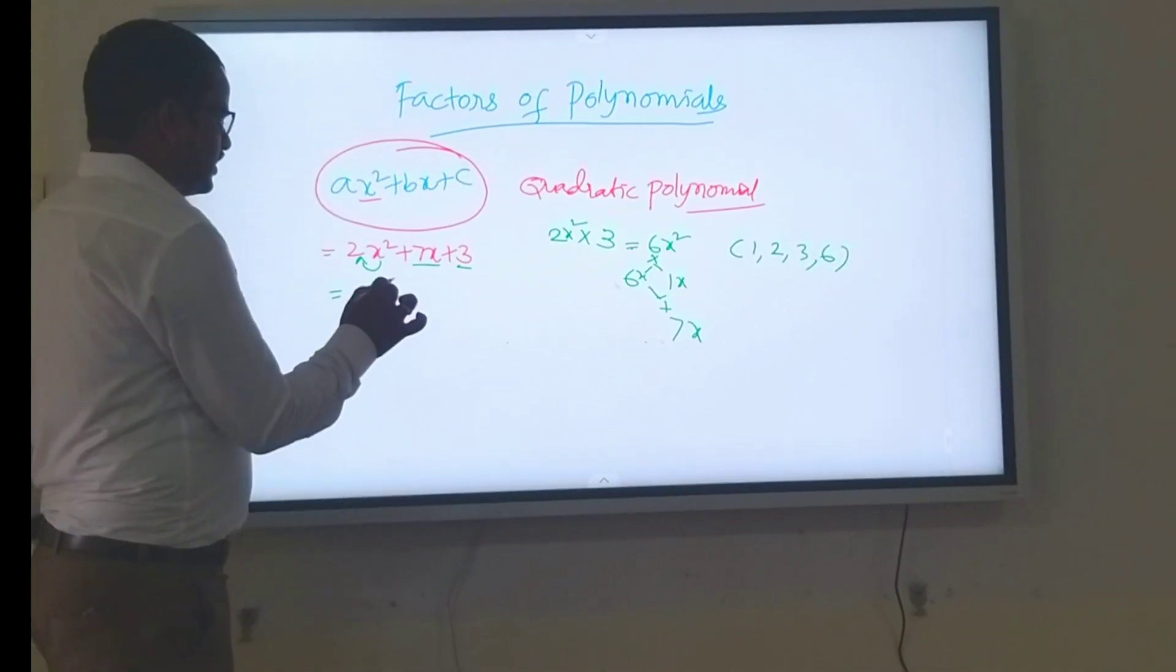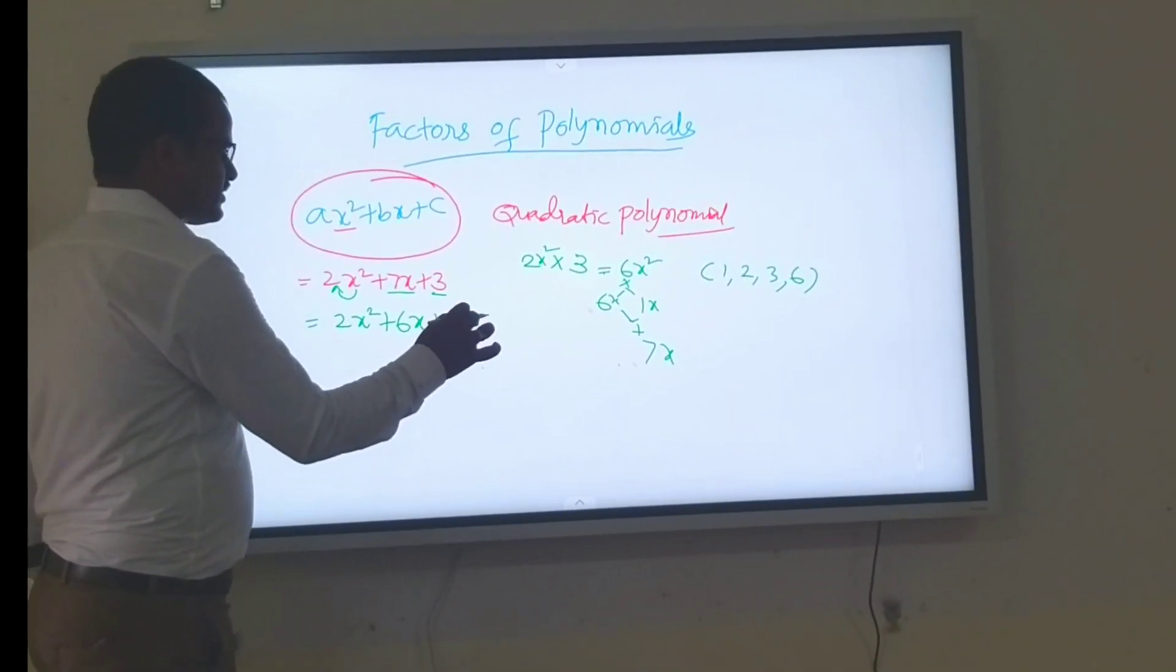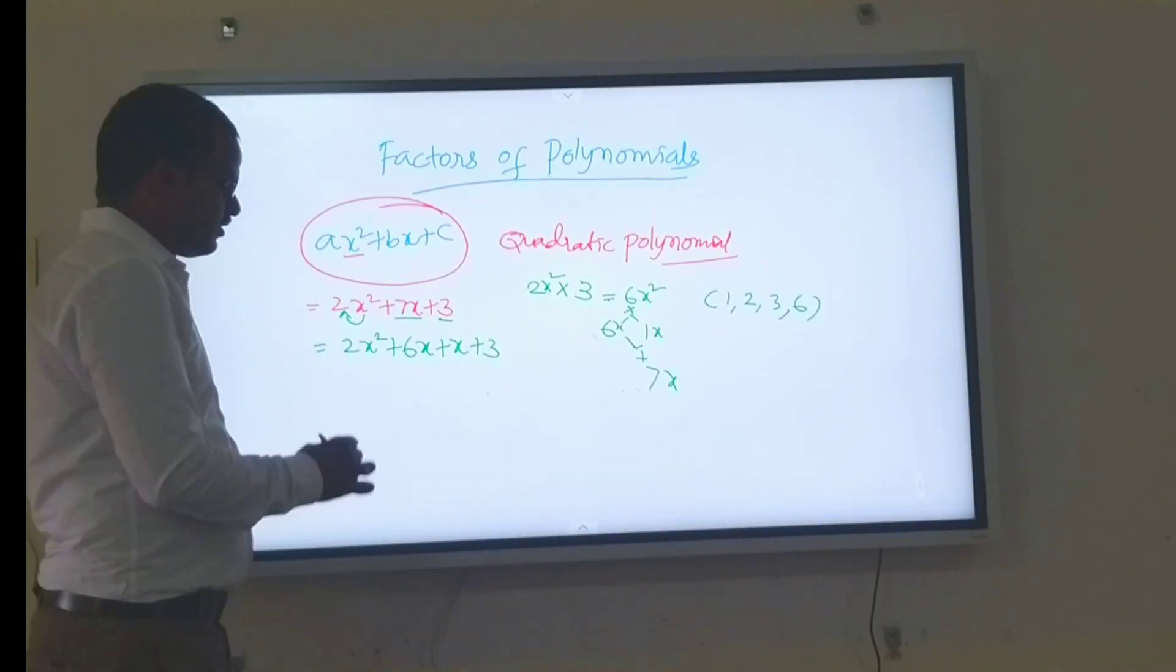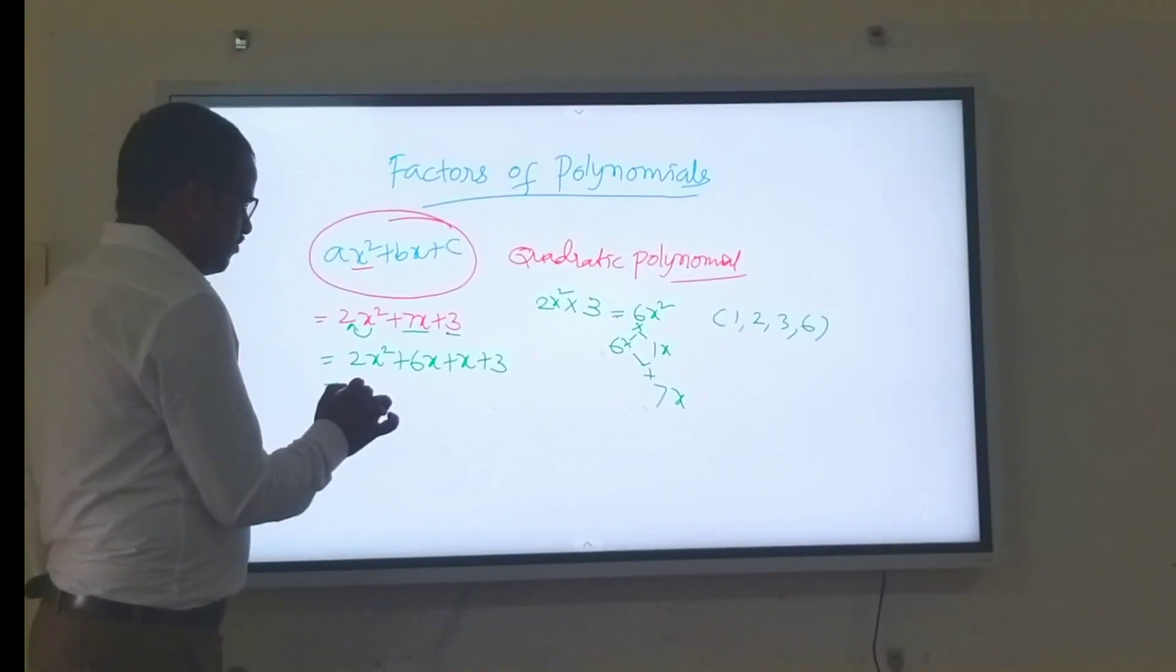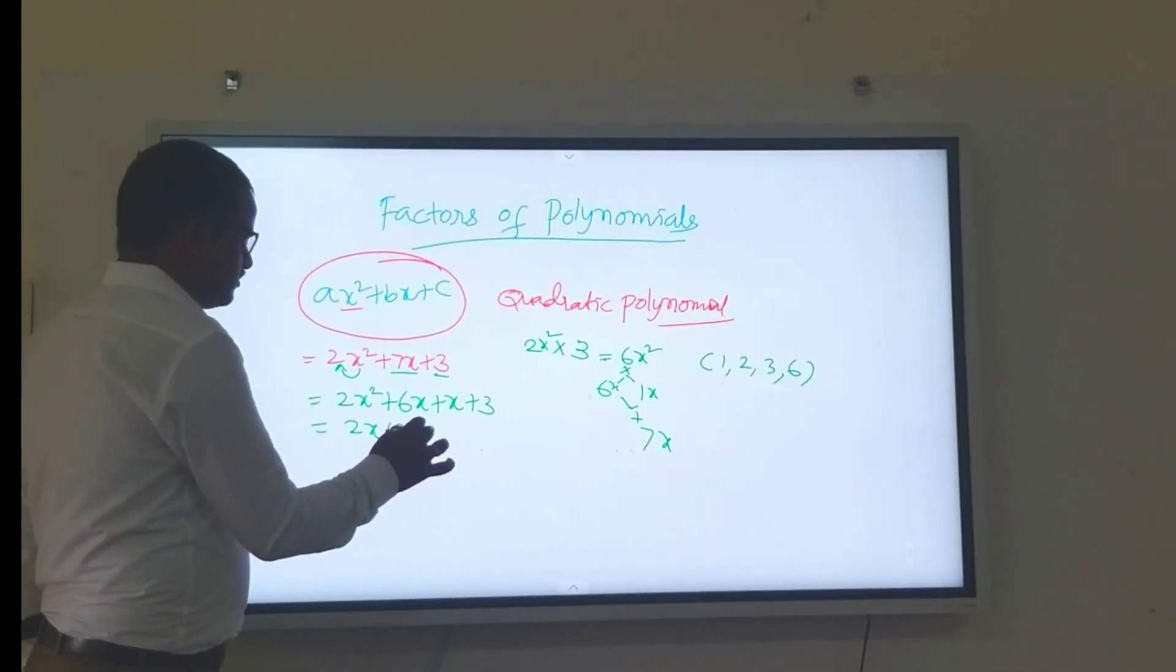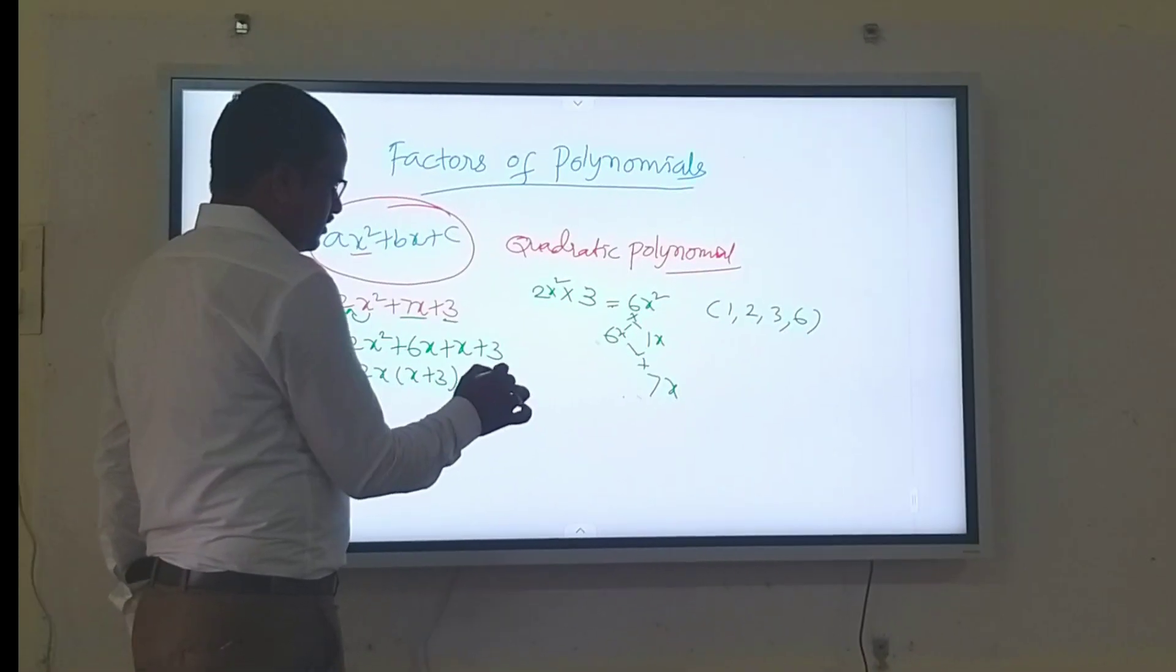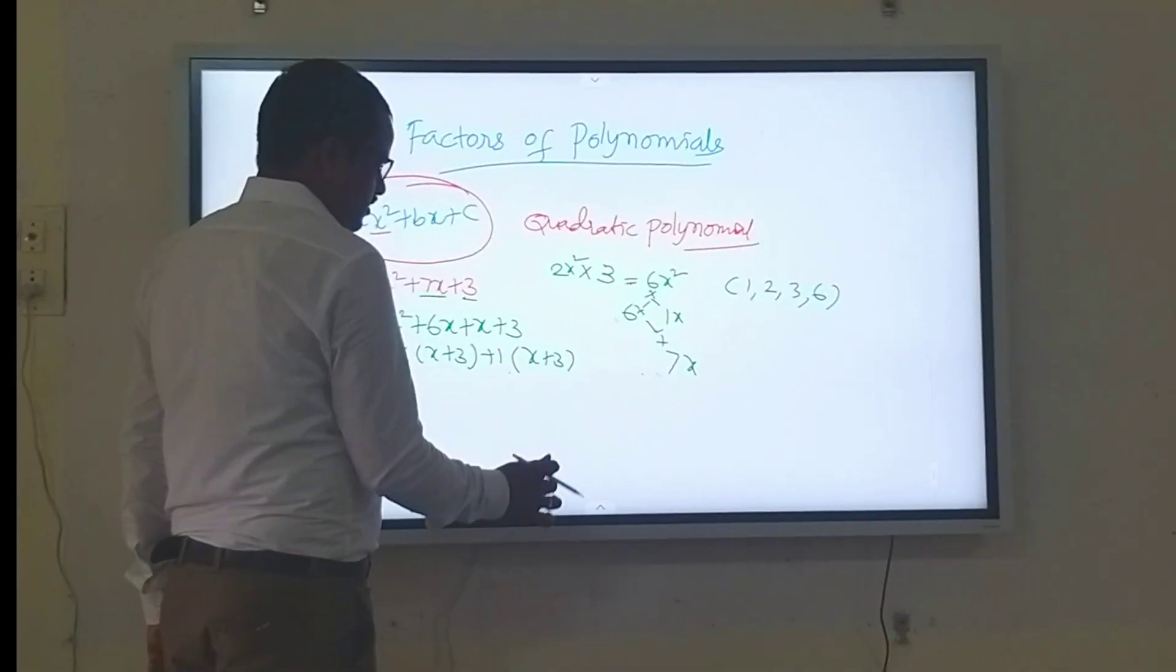That is equal to 2x square plus 6x plus 1x plus 3. Now, what is the common here? 2x times x plus 3. Now keep x plus 3 as common.